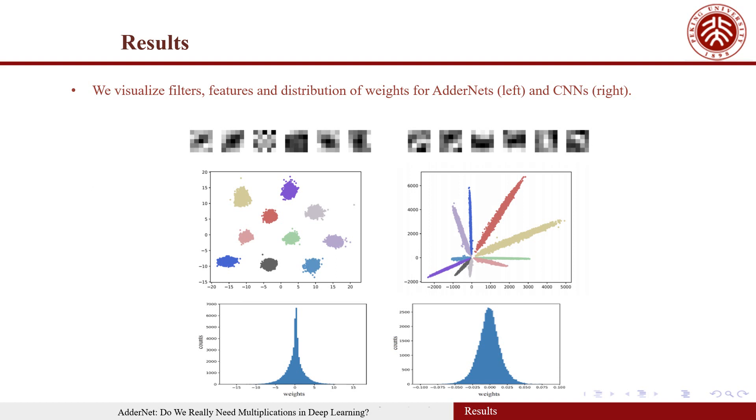The features of CNNs in different classes are divided by their angles. In contrast, features of AdderNets tend to be clustered toward different class centers, since AdderNets use the L1 norm to distinguish different classes.